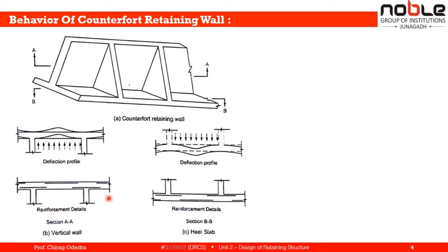For section BB — the heel slab — the weight of the retained earth mass causes the slab to deflect downward between counterforts, so tension is on the bottom and compression on top in the span. Near the counterforts acting as supports, tension is on the top side and compression on the bottom. Reinforcement is provided at the bottom in the span region.